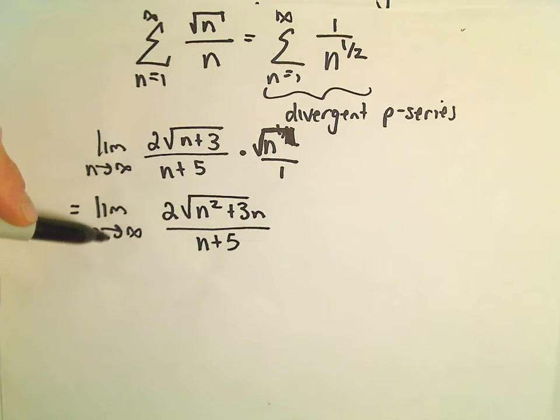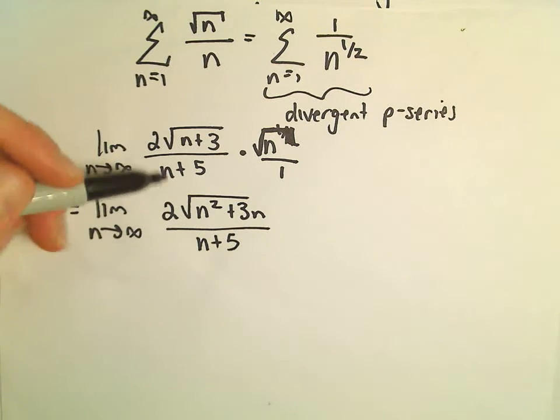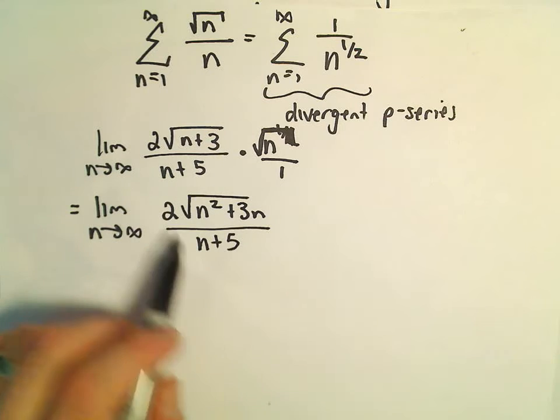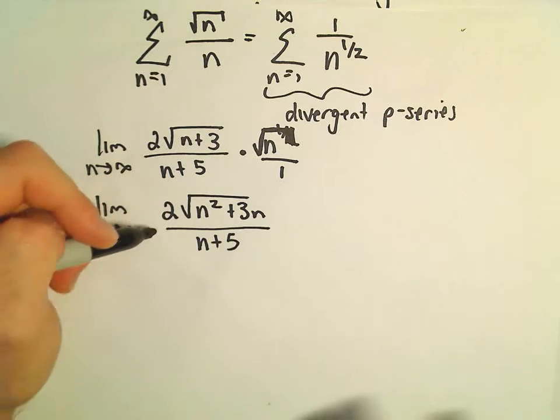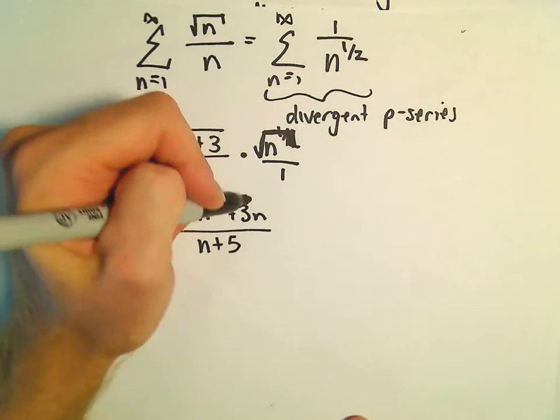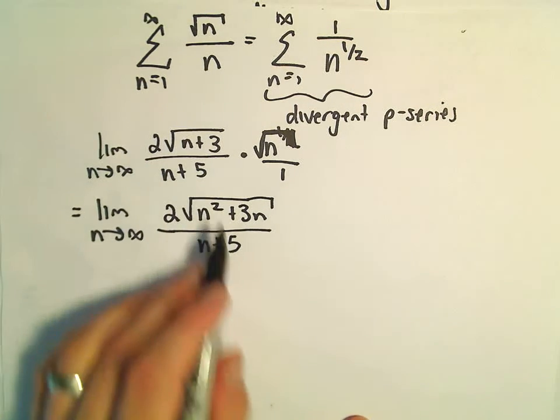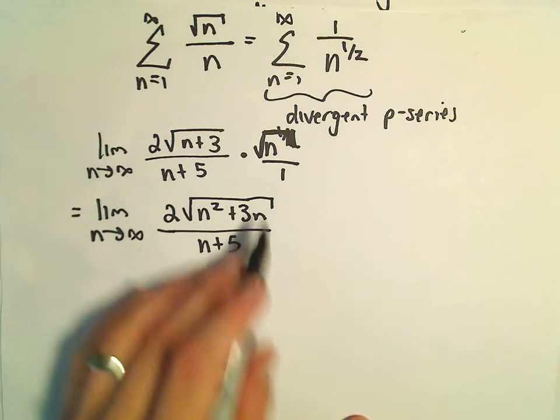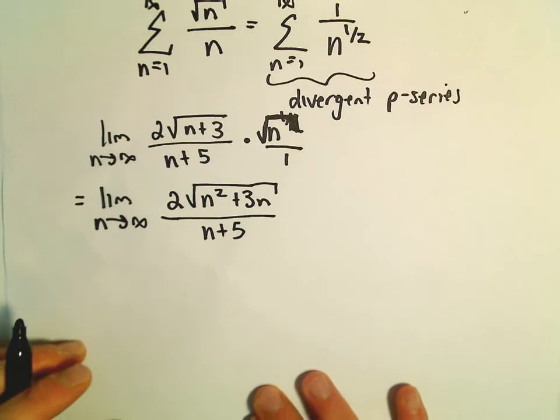So when we do the limit as n goes to infinity, what we could do is we could start using L'Hopital's rule and see what happens. I think actually it might not work. It's certainly valid to use it, infinity over infinity. So you can try it, see if L'Hopital's rule works.